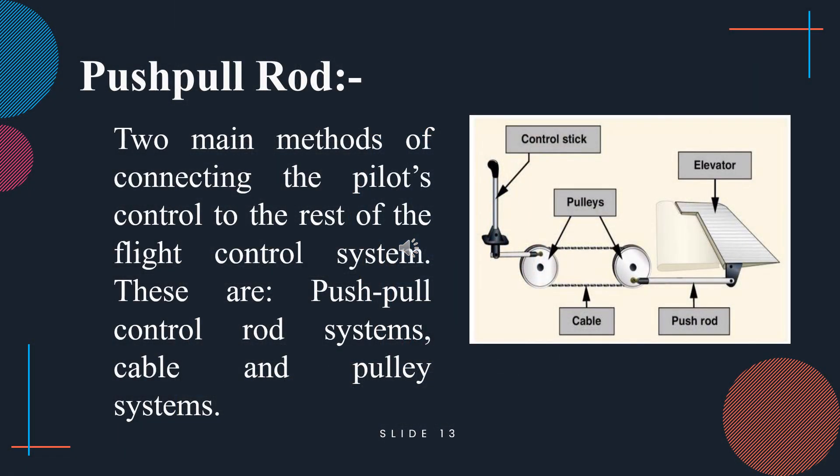There are two main methods that transfer force to the flight control system: push-pull control rod systems and cable-and-pulley systems. In the cable system shown, movement of the cockpit controls transfers force through the cable to the bell crank, which then moves the control surface. A 1/8 inch diameter cable is used here because it controls a flight control surface — the elevator.